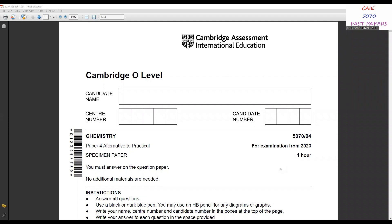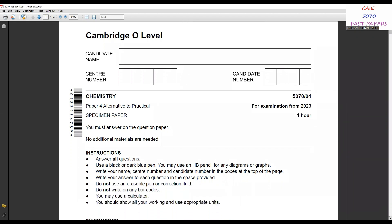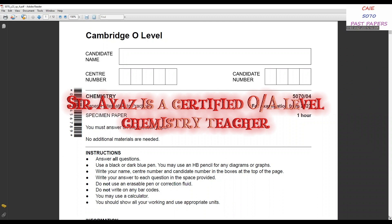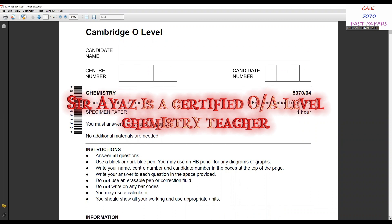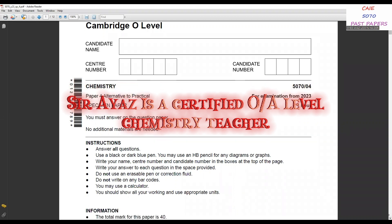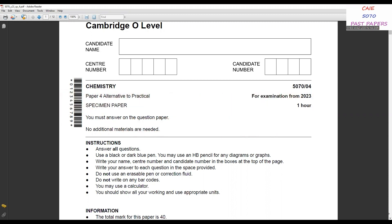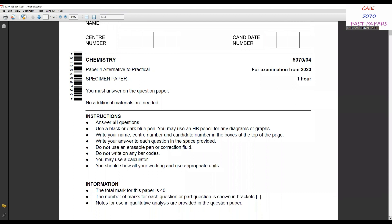First of all, let's look at the instructions for Cambridge O Level Paper 4, which will be followed for examinations from 2023. It will be of one hour. Instructions will be: answer all questions, use a black or dark blue pen, you may use an HB for any diagrams or graphs, write your name, center number, and candidate number in the boxes at the top of the page, write your answer to each question in the space provided. Do not use an erasable pen or correction fluid. This is very important - you are not allowed to use correction fluid. Do not write on any barcodes. You may use a calculator. You should show all your working and use appropriate units.